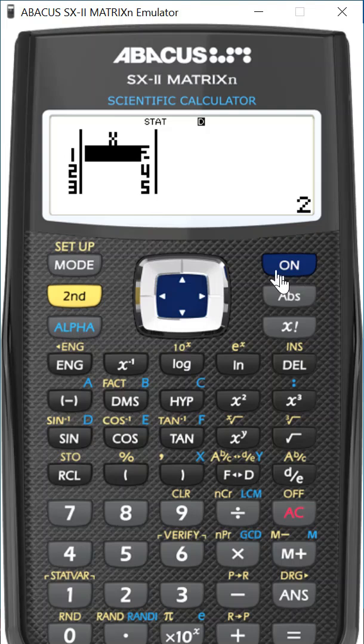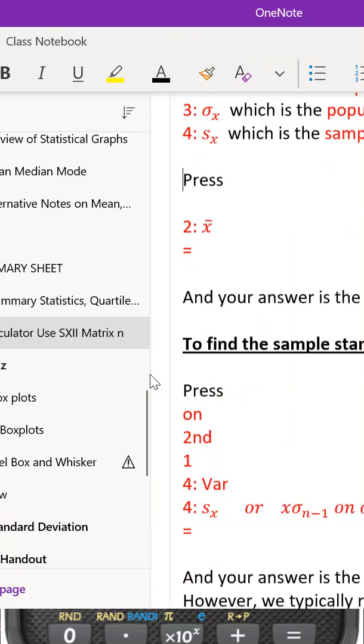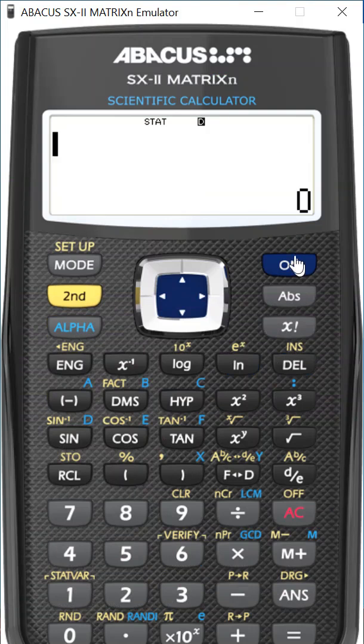So once you've got your five values in, everyone on the same page so far, you press the ON button and it should have the stat at the top. Oh, yes, that's right. Okay. So now you've got the stat and the zero.